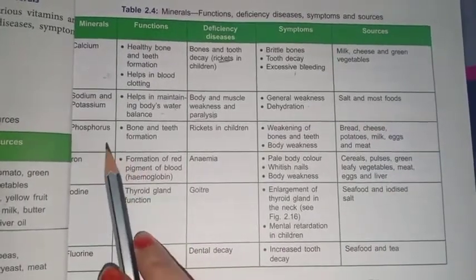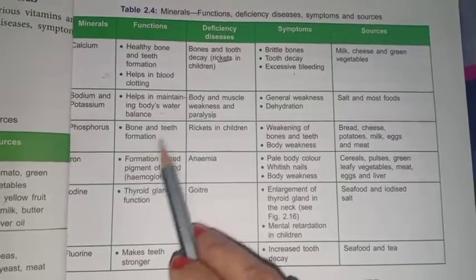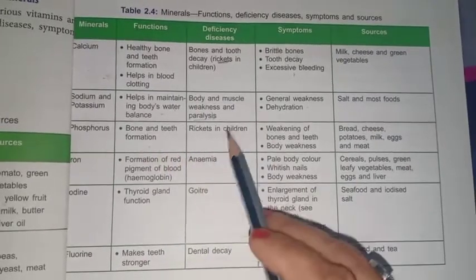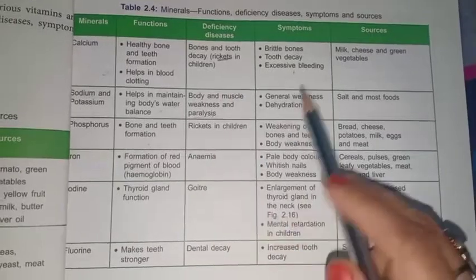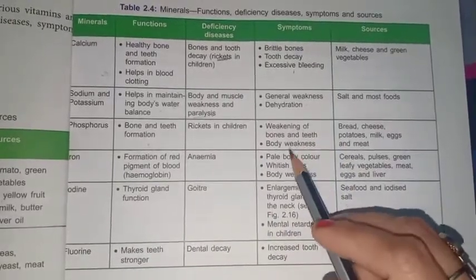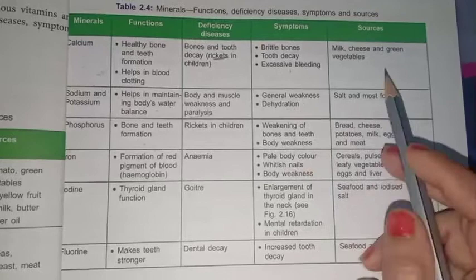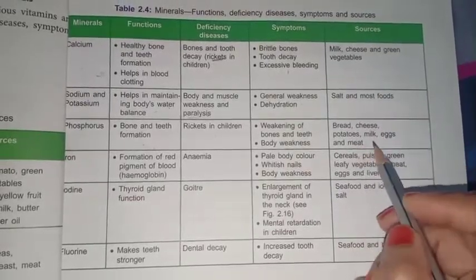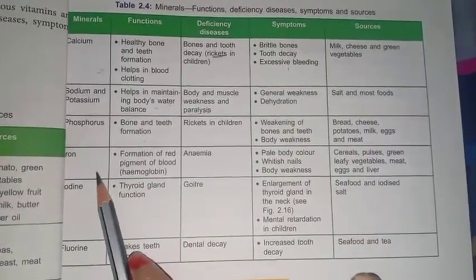Next we have phosphorus. Its function is bone and teeth formation. Its deficiency also causes rickets in children. Symptoms are weakening of the bones and general body weakness. Its sources are bread, cheese, potato, etc.